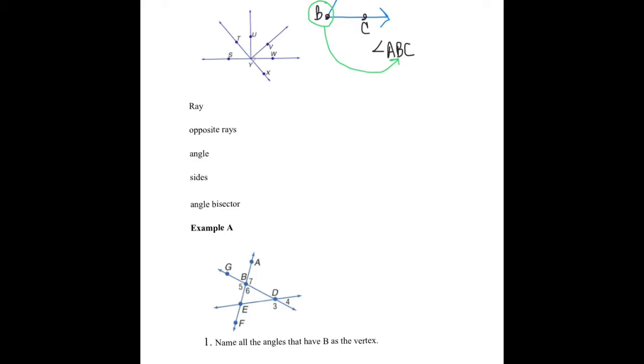You will also notice that angle ABC is made by ray BC and ray BA. If you remember, a ray is an endpoint with the opposite end going on forever.